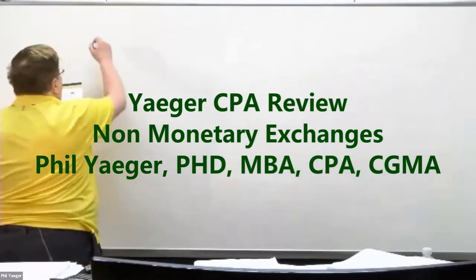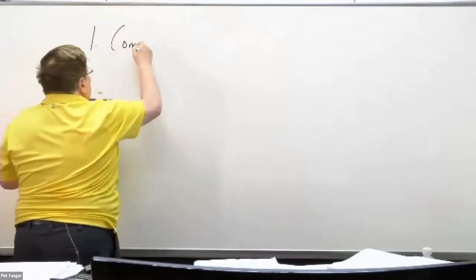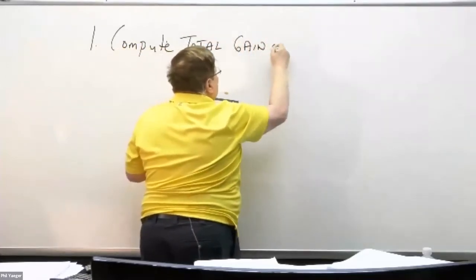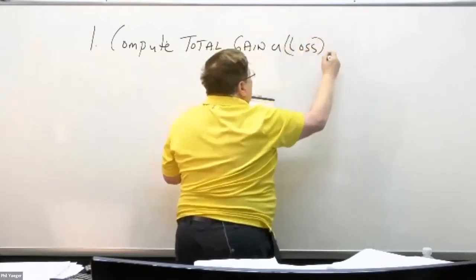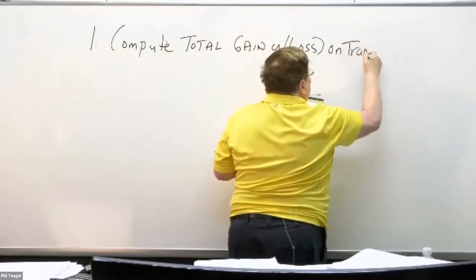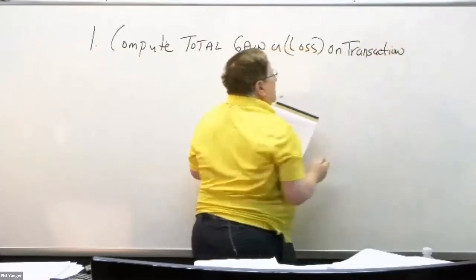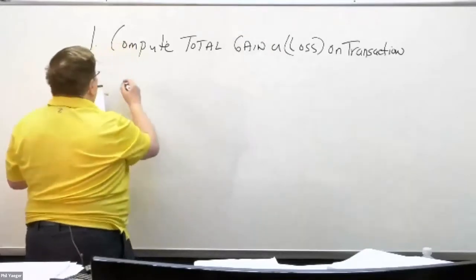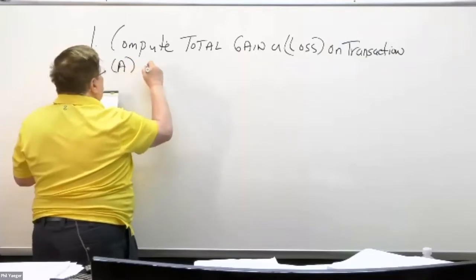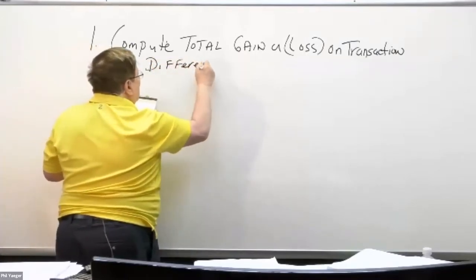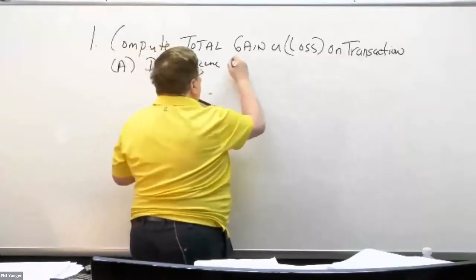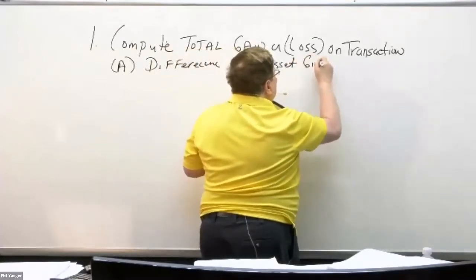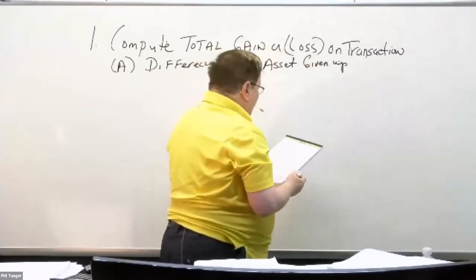We're going to take double jeopardy. Number one: you want to compute the total gain or loss on the transaction. To compute the gain or loss, you take the difference between the fair value of the asset given up and the book value of the asset given up.